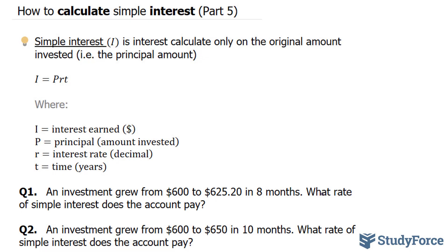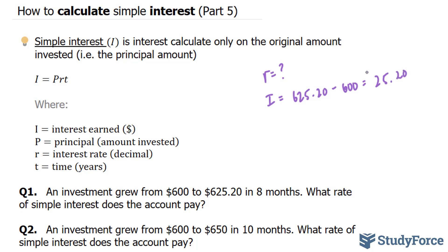So this time we are looking for R, and we are told that the interest earned is $625.20 minus $600, so they gained $25.20 in interest. The time frame here, t, is 8 months.